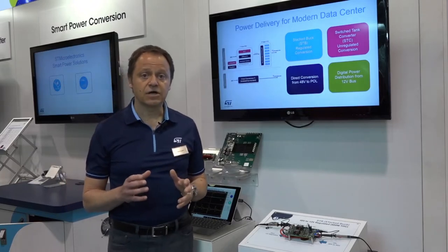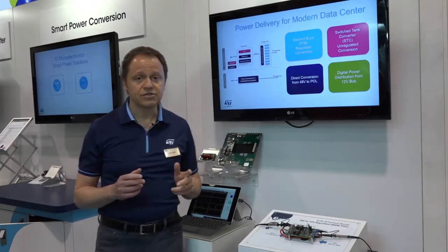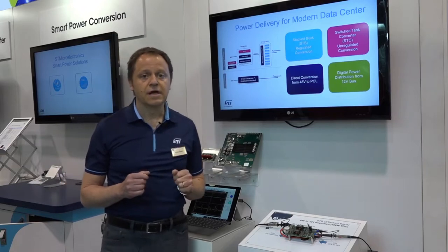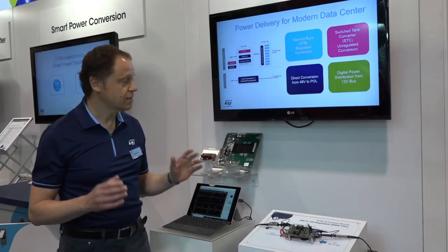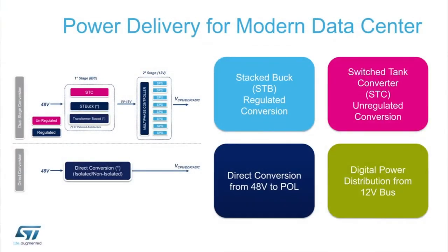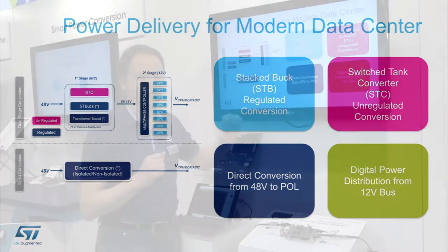ST offers a wide range of products for managing the 48-volt conversion, and particularly we have two classes of products or architectures. The first is a dual-stage conversion, where we convert from 48 volts down to an intermediate bus and then from that intermediate bus straight to the CPU or digital point of load. The second class is a direct conversion from 48 volts down to the point of load.